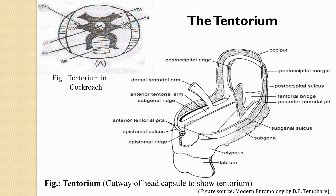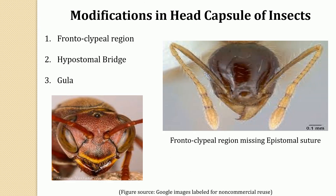This is about the endoskeleton of the insect head — the tentorium. Keep in mind this is a very important topic for examinations; the diagram of the tentorium is frequently asked for three or four marks. The next part of this video covers modifications in the head capsule of insects. The anterior frontoclipeal and the posterior lateral as well as ventral regions of the head capsule are greatly modified in some insects, and three kinds of modifications can be seen: the frontoclipeal region, the hypostomal bridge, and the gula.